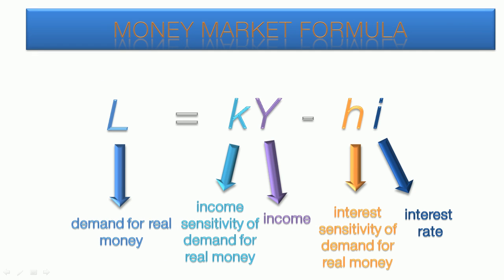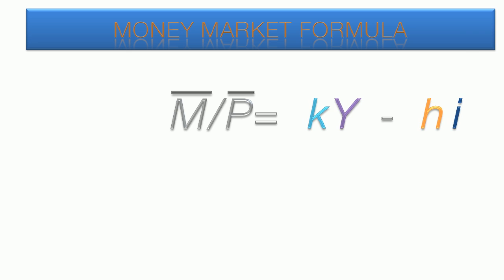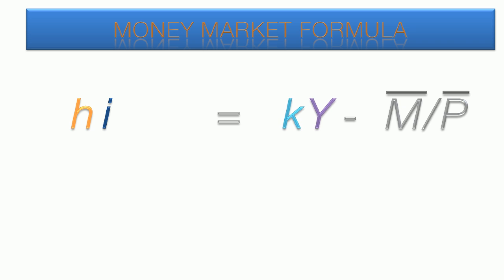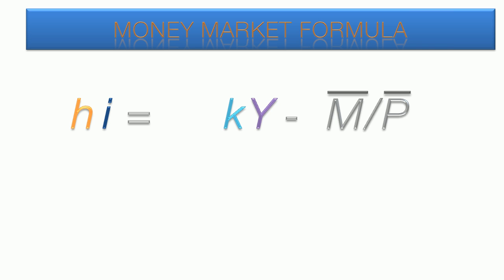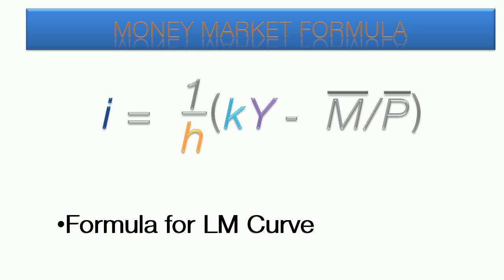Now that we've gone through the relationship graphically, we're going to examine this equilibrium condition algebraically. Here is the demand for real money balances formula. Equilibrium is reached when supply equals demand, so we will substitute real money supply in for L. We want to solve the equation for I because it is the dependent variable in the LM curve. We bring HI over to the left side of the equation and move the money supply to the right side. We divide both sides by H, the interest sensitivity for demand for money. It cancels out on the left side and stays on the right side. And here is the formula for the LM curve. This gives you the equilibrium interest rates for different levels of national income, Y.